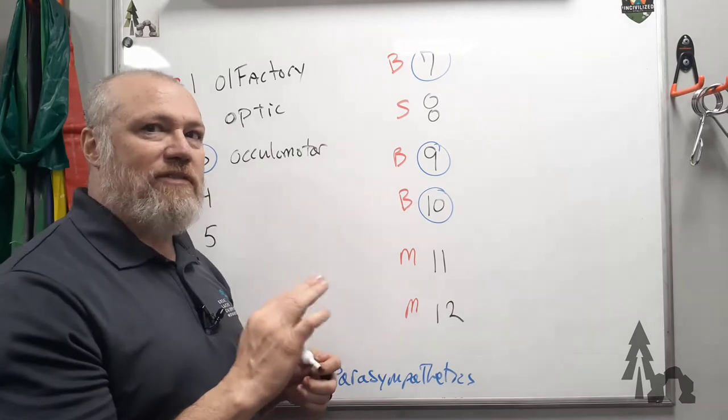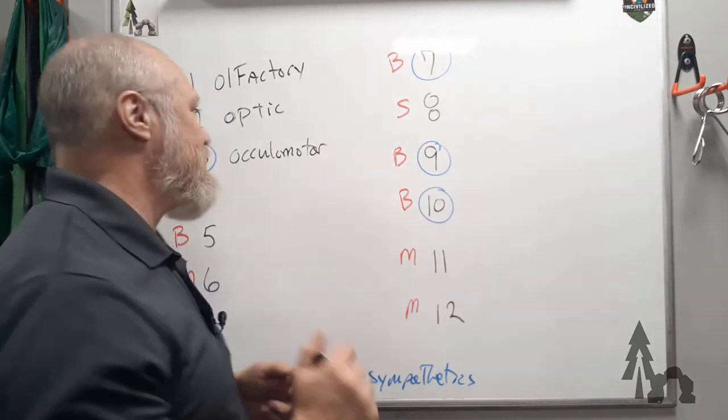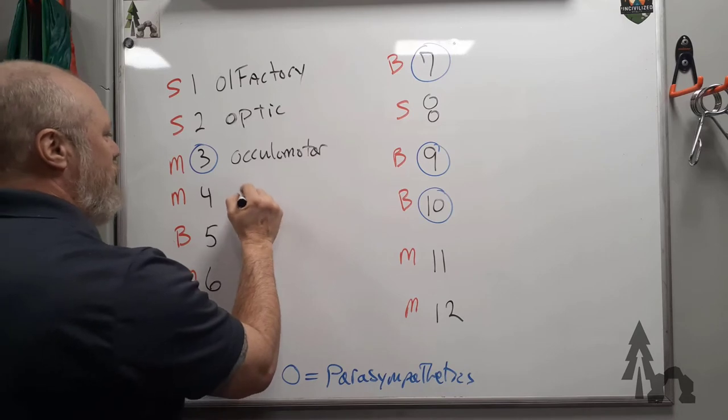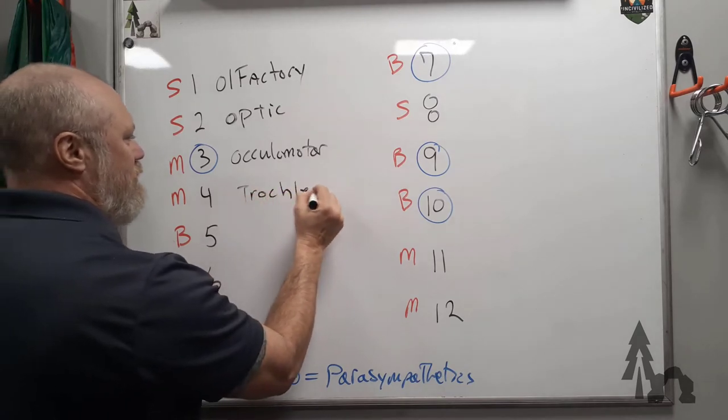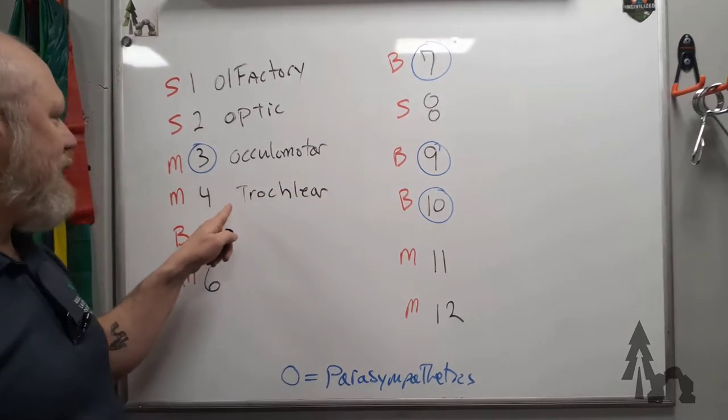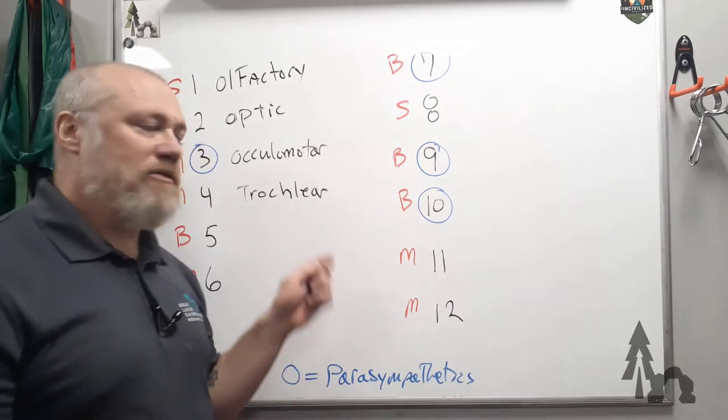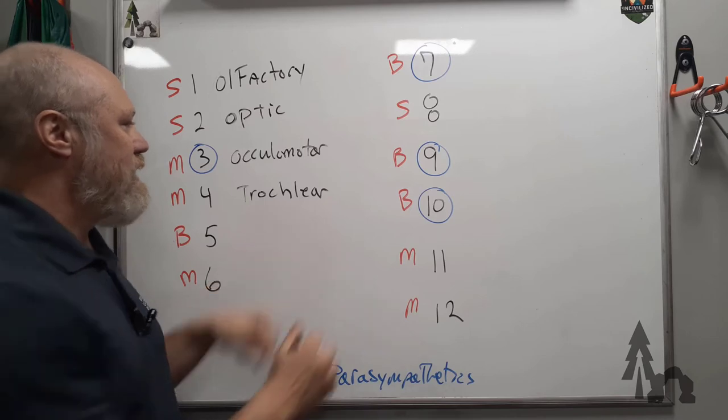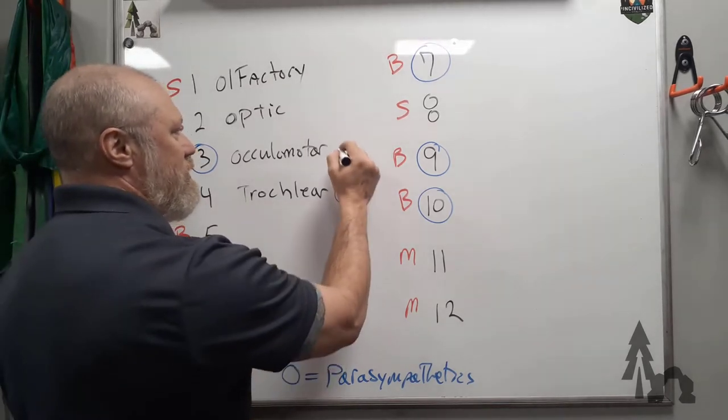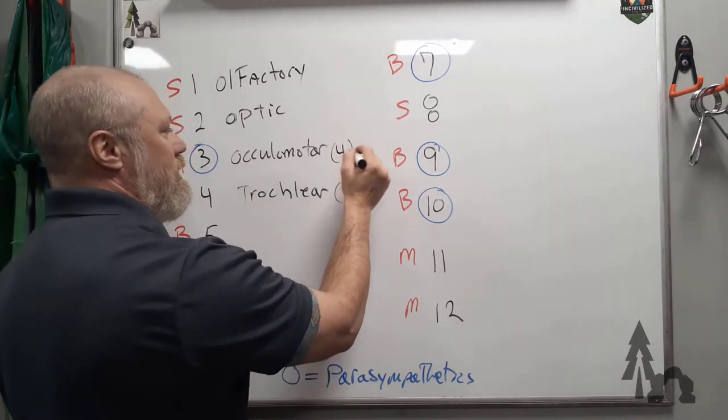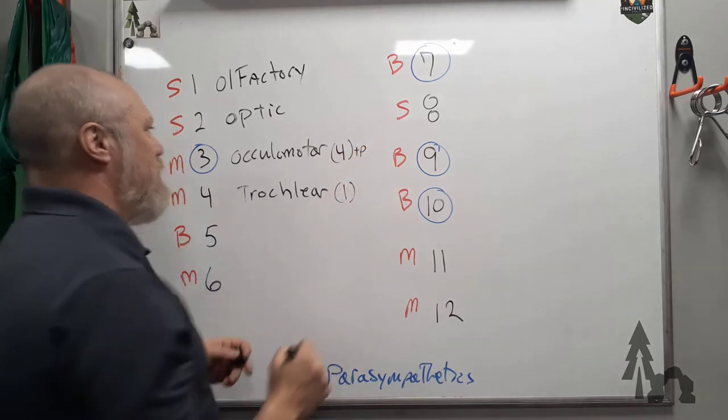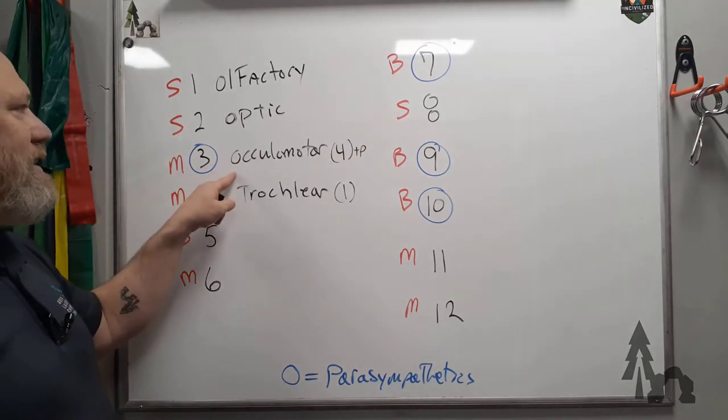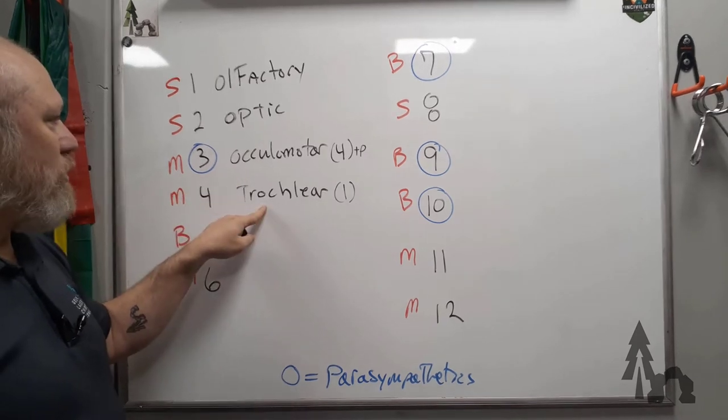Four is the trochlear nerve. The trochlear nerve is going to handle one extraocular muscle, the superior oblique muscle that moves your eye. I'm just going to put a one here to remind you there's one. The oculomotor plus pupil is the one that moves most of the eyes—three of the recti and the inferior oblique. Trochlear nerve just has superior oblique.